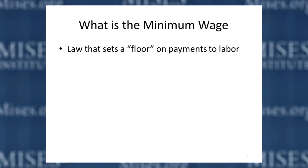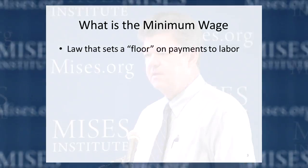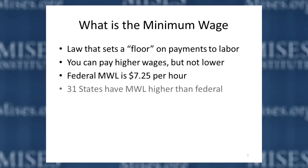So what is the minimum wage? It's simply a floor — a legal floor — on how much labor can be paid on an hourly basis. Currently, the federal minimum wage says employers cannot pay less than $7.25 an hour. It prevents people from making contracts below that specified level, even though both parties may think they'd benefit. You can pay much higher wages, but you cannot pay lower.